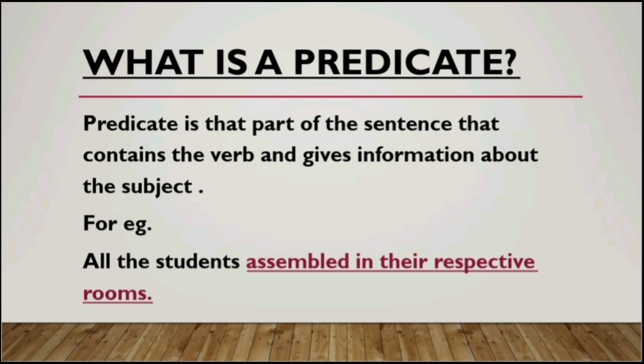Have a look at this example: 'All the students assembled in their respective rooms.' Here, 'all the students' is the subject — the doer of the action. The action being performed is that they assembled in their respective rooms. So 'assembled in their respective rooms' is the predicate — that part of the sentence which contains the verb and adds more information about the subject.